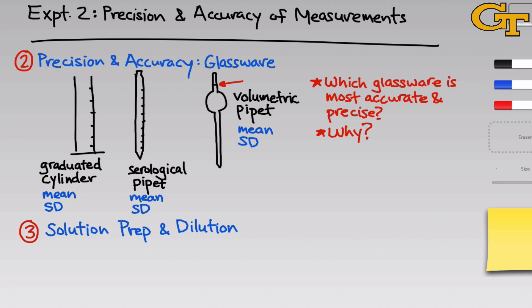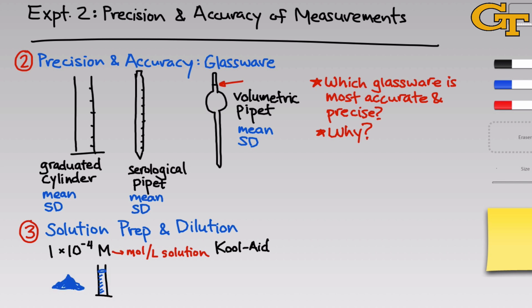In the final part of the experiment, we'll prepare solutions, dilute them, and take spectroscopic measurements of each to illustrate how concentration and absorbance are related. We'll work with a 1×10⁻⁴ molar solution of Kool-Aid — capital M stands for moles per liter, the definition of molarity. To prepare this solution, you'll mass out the appropriate amount of blue or red Kool-Aid powder to place in 100 milliliters of water. You'll then take 5 milliliters of this stock solution and prepare dilutions by adding varying amounts of water to varying volumes of the Kool-Aid stock.